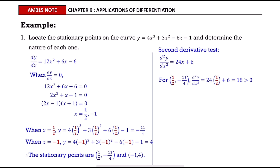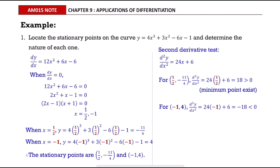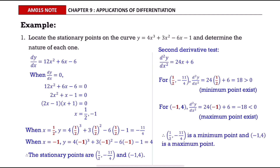The value 18 is greater than 0, so a minimum point exists. Then test the point (-1, 4) by substituting -1 into the second derivative, which equals -18, less than 0, so a maximum point exists. Then make the conclusion.